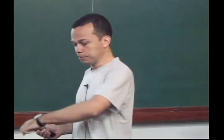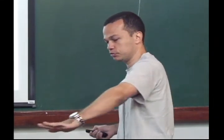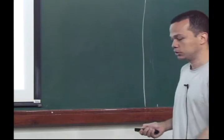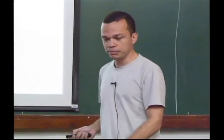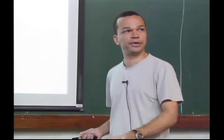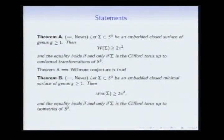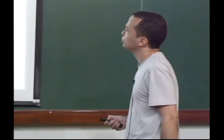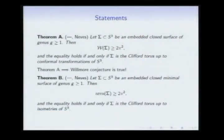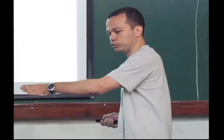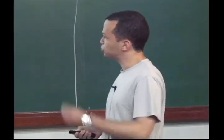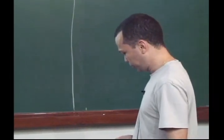Theorem B is of independent interest for geometers, because it classifies minimal surfaces in S³ by area. The simplest minimal surface is the equator — the intersection of S³ with a plane through the origin — which is a great 2-sphere of area 4π and index one. It was known this was the minimal surface of least area. Theorem B says the next one is the Clifford torus: if you classify minimal surfaces by area, the list starts with the equator, and we prove the next is the Clifford torus with area 2π².